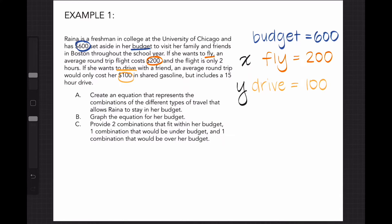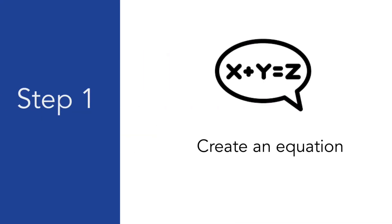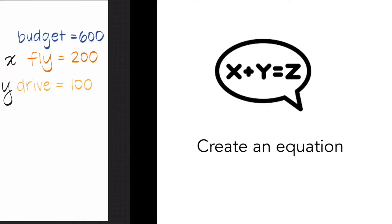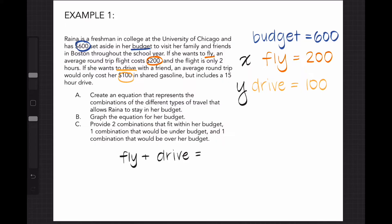Now that I've got the necessary info set up, we can move to Part A, which asks us to create an equation of the combinations of flying and driving that meets Raina's budget. Flying will cost $200 multiplied by the amount of flights she'll take, which we set up earlier to be X. For driving, it costs $100 multiplied by the amount of times she'll drive, which we set up earlier to be Y. And when we add these two terms together, it should equal our budget of $600.